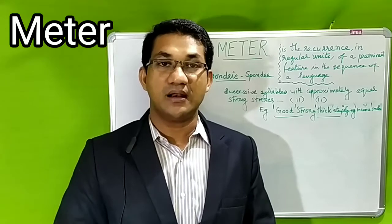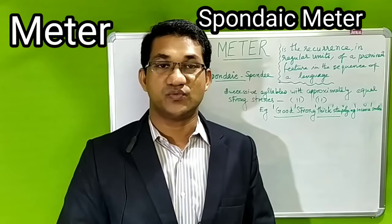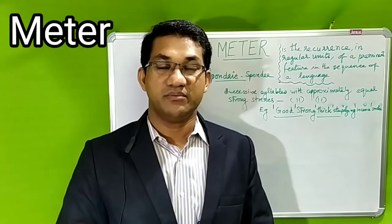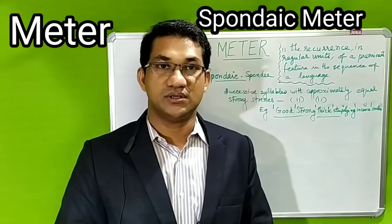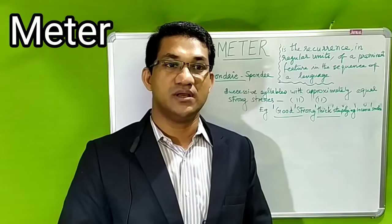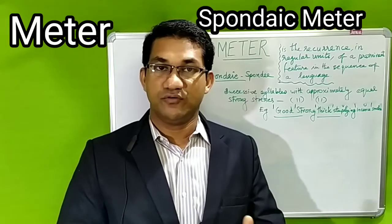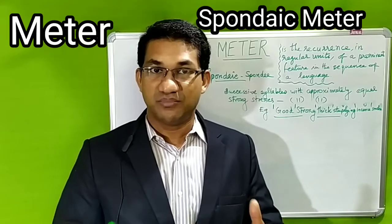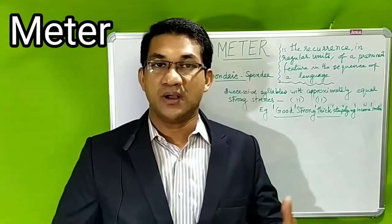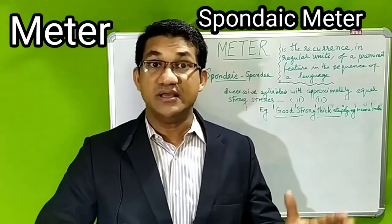We are learning meter and in the previous videos we have learned four important meters. We learned the iambic meter, the anapestic meter, the dactylic meter, and of course the trochaic meter. If any of you missed those videos, please watch them and understand how meter is used in poetry, especially English poetry.